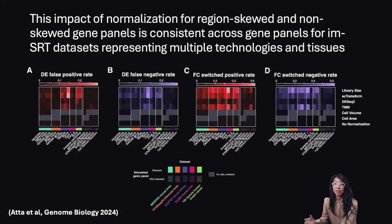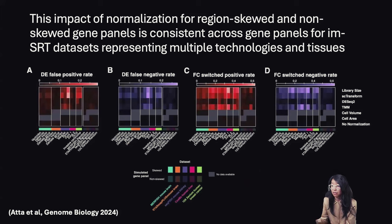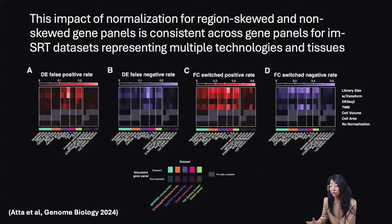We apply this to many different imaging-based spatially resolved transcriptomics datasets, representing many different technologies and many different tissues. To summarize all of these results, we can quantify these differential expression false positives and false negatives, as well as fold change switch rates, across a variety of normalization methods, gene panels, tissues, and technologies. This shows that the impact of normalization for region-skewed gene panels is consistent across gene panels for imaging-based spatially resolved transcriptomics datasets representing multiple technologies and multiple tissues, with error rates impacting as many as 30% to 60% of the genes evaluated.